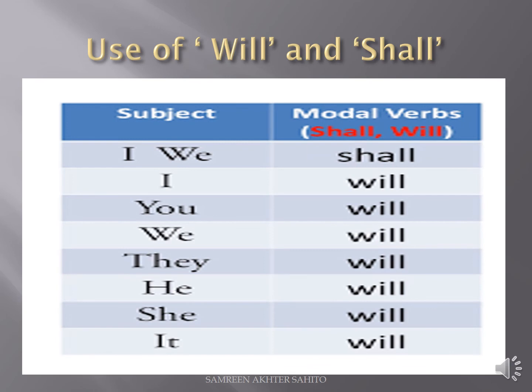Use of will and shall. Will and shall are used as auxiliary verbs — helping verbs. In British English, except with 'I' and 'we,' we put 'will' with all pronouns: you, they, he, she, it. But in American English there is no difference — with all pronouns you can use 'will.'